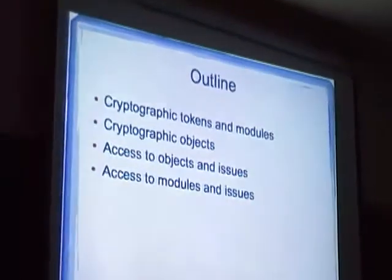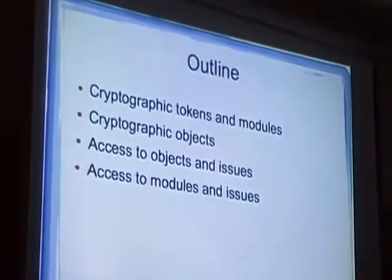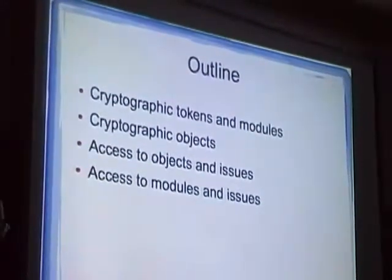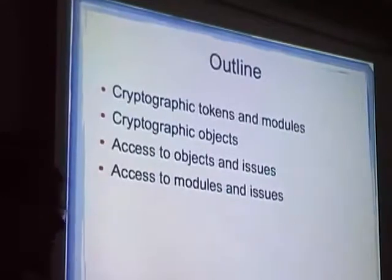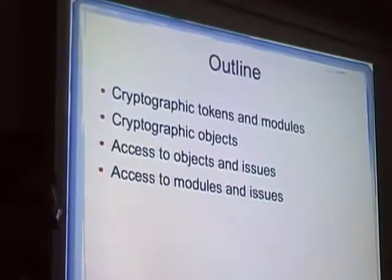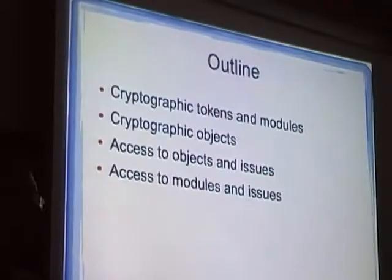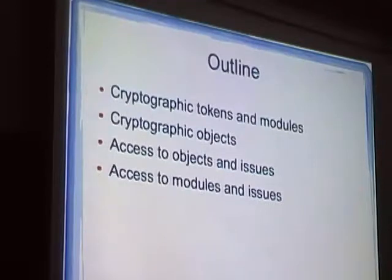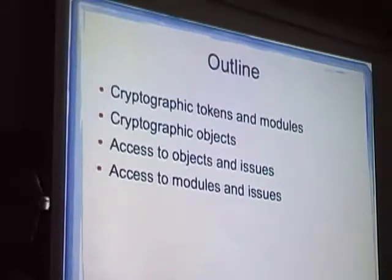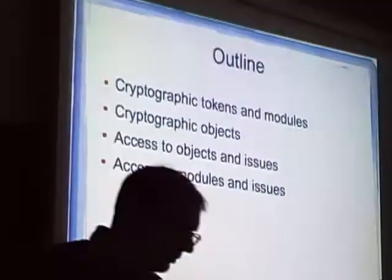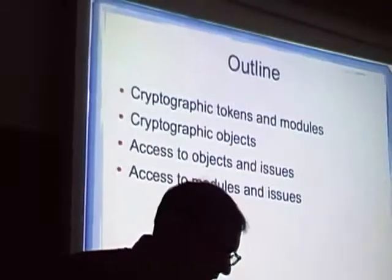The outline of the presentation is: first I'm going to talk about — probably you know already, as I've seen in the previous presentations — but I will elaborate on what cryptographic tokens and modules are, what cryptographic objects are and what I mean by it, what I mean by access to the objects, what are the open issues we face today, and also about the modules, how do we access them today and what issues we have.